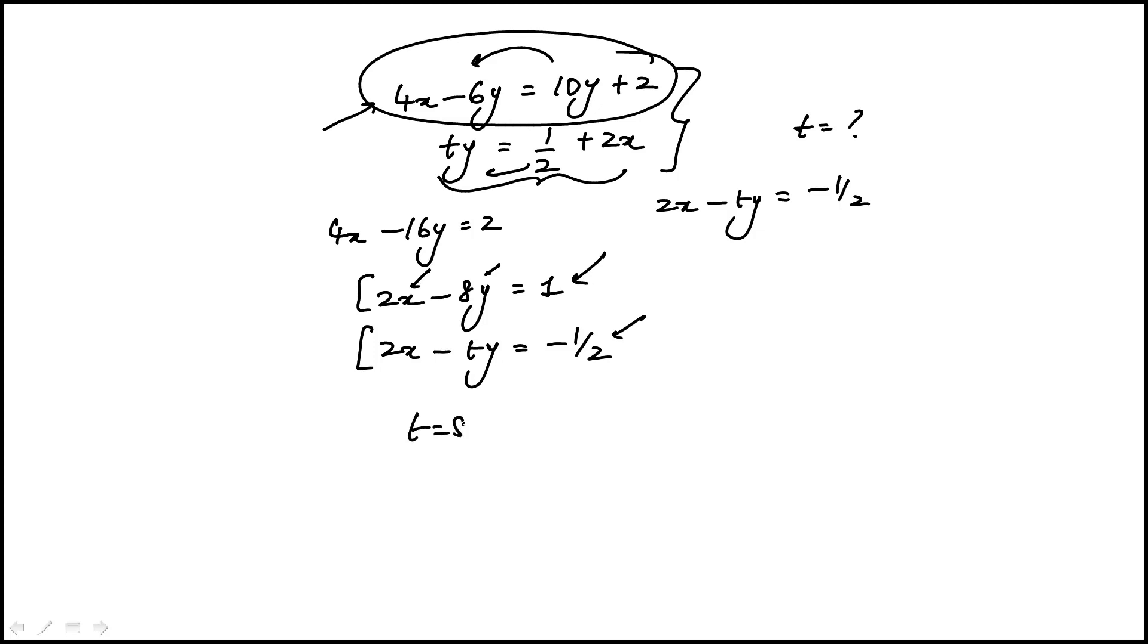So if t is 8, then this system will have no solution, because you have the same expression equal to two different numbers. So the answer is t is 8.